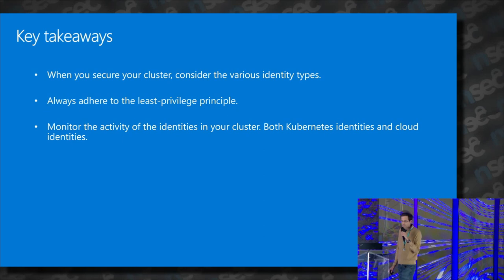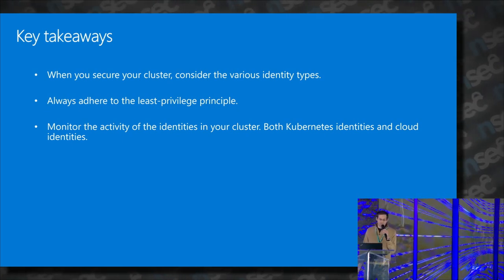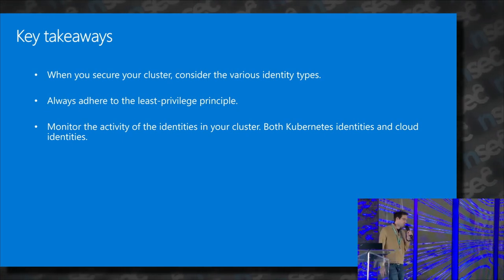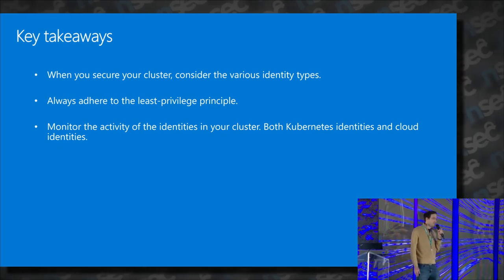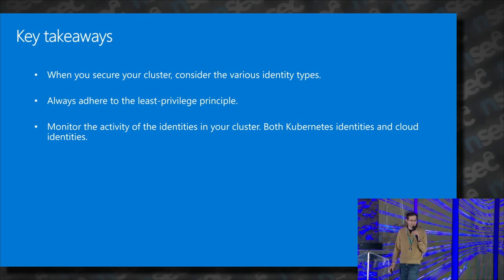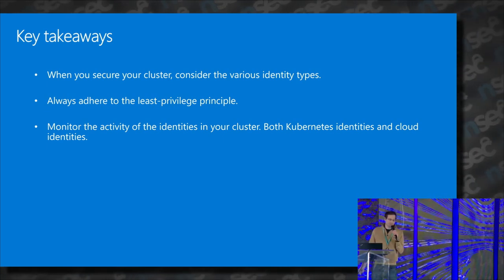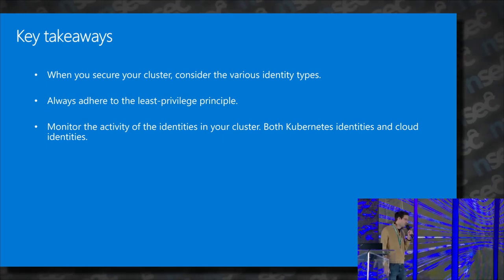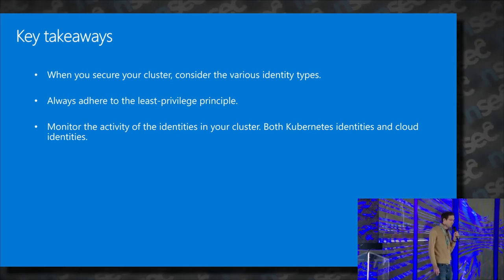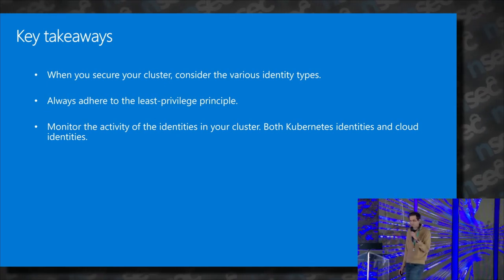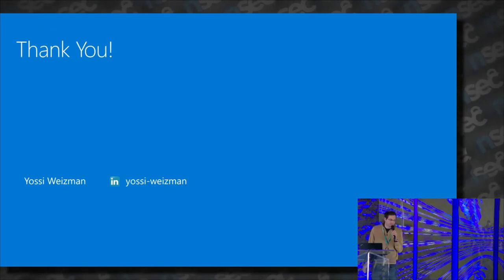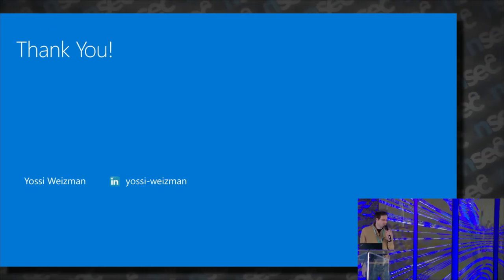Key takeaways: when you secure your cluster, consider the various identity types — both identities in the cluster and outside the cluster. Always adhere to the least privilege principle for both Kubernetes identities and cloud identities. And third, monitor the activity of your identities and look for suspicious operations. Thank you very much, I hope you found it interesting.